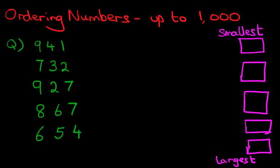And we've got the smallest number at the top and the largest number at the bottom. So, let's have a look at our numbers. We've got five sets of numbers. And what do we do? We start with the digit on the left-hand side. That is this one here, the hundreds column.